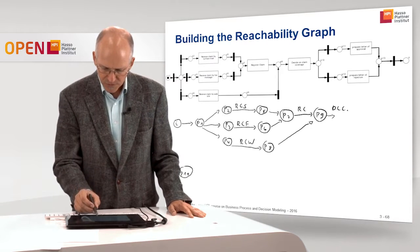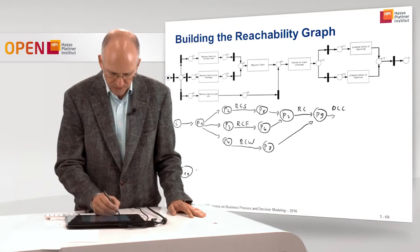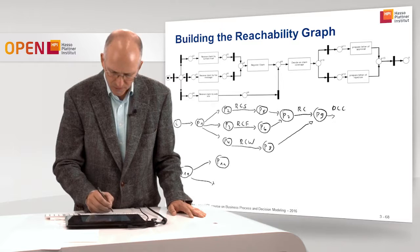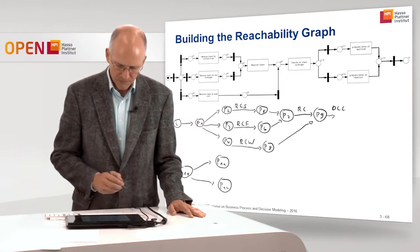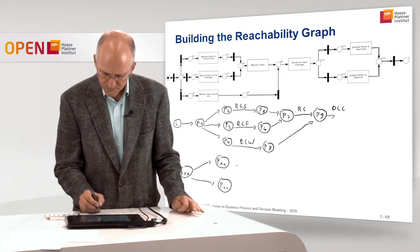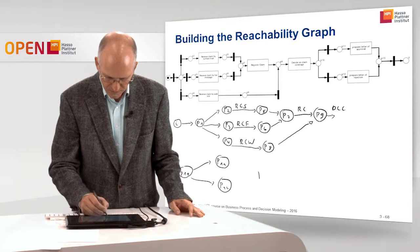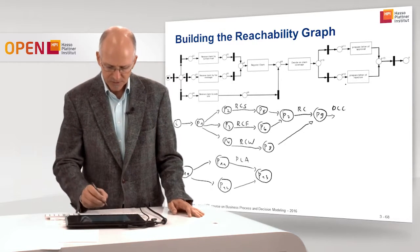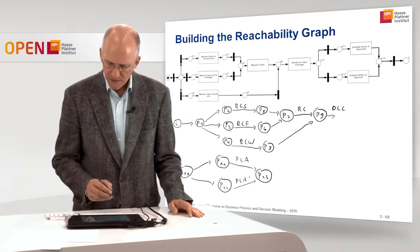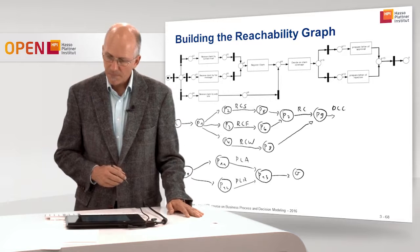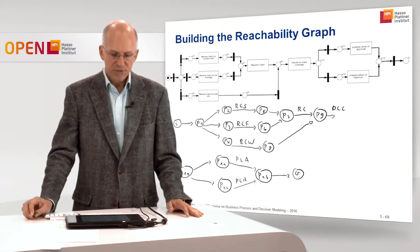In P10 we have two alternatives: we can go to P11 or P12. In P11 we can prepare letter of approval, bringing us to P13. In P12 we can prepare letter of rejection. From P13 we reach the final place O. That should be the complete reachability graph of this model.